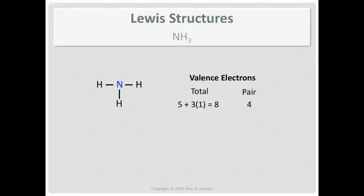What's the next rule? We've distributed three pair. We have one more pair. Place any remaining pair on the central atom. So we put it on nitrogen. You can't put it on as a double bond with hydrogen, because hydrogen only makes one bond, period.